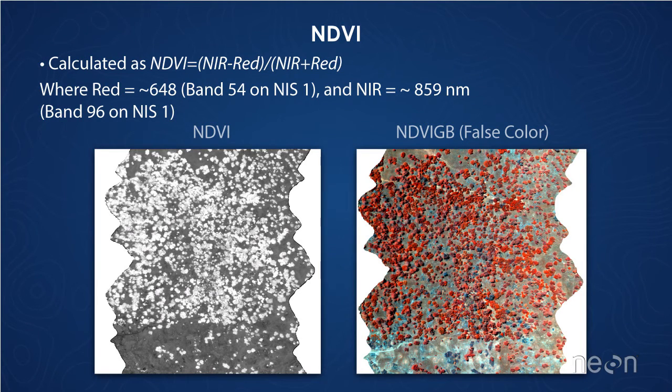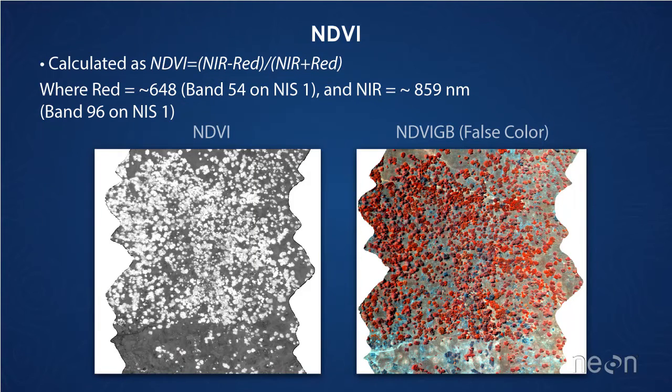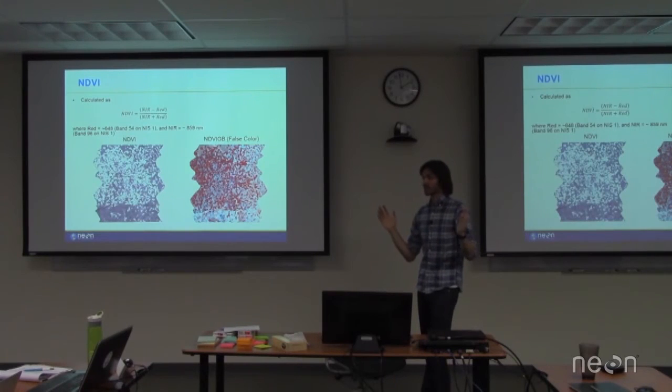So remember I mentioned earlier, what do we choose for near-infrared and red? These are the ones, this is what we've chosen. For red, whatever was closest to 648, just that single band. For near-infrared, whatever was closest to 859. So for NIS-1, that was band 54 and band 96. Is that the best choice to make right now? I don't know. We'll find out.